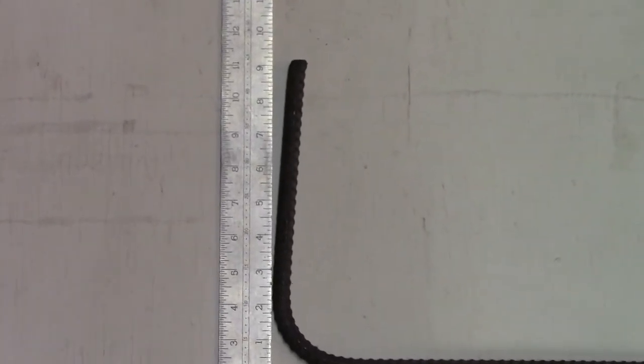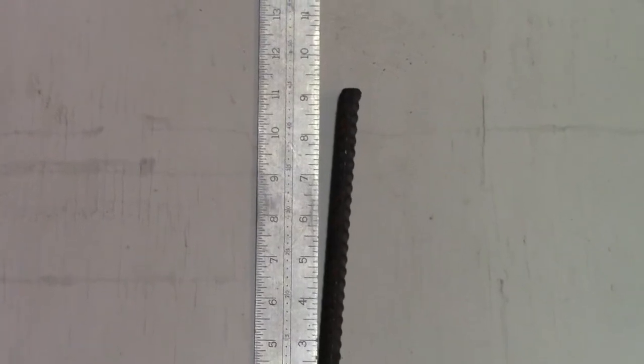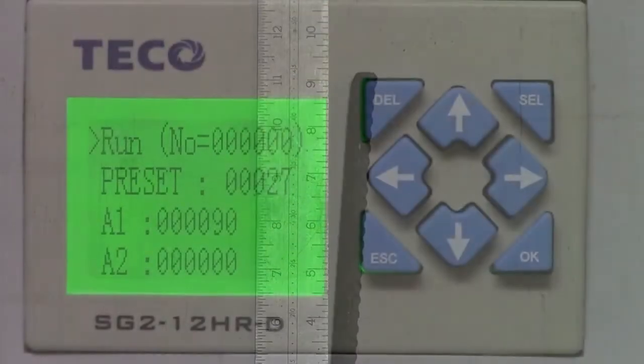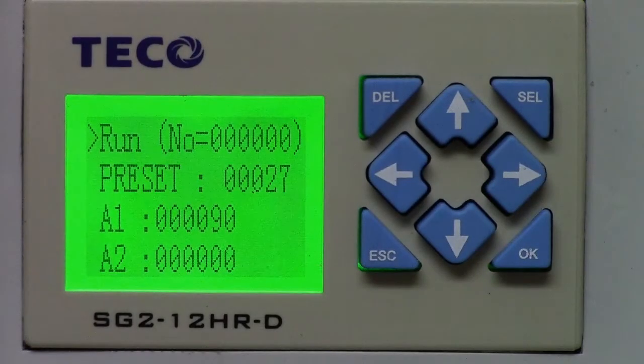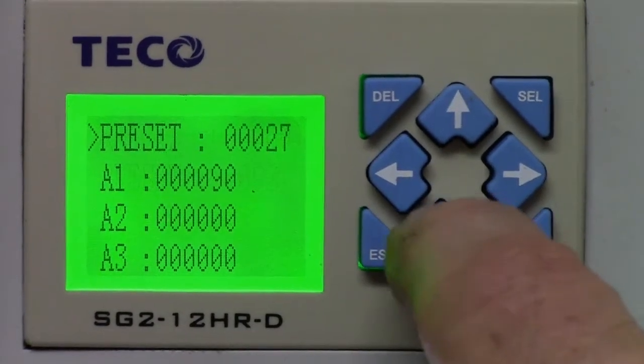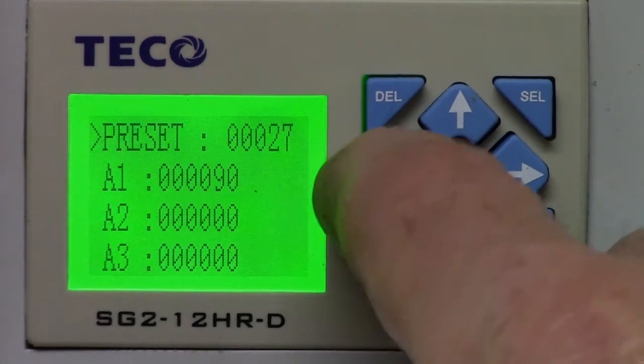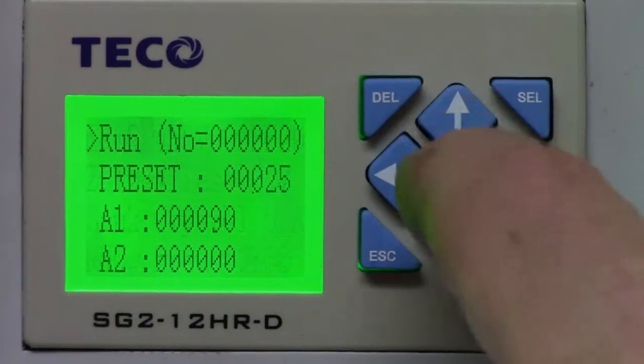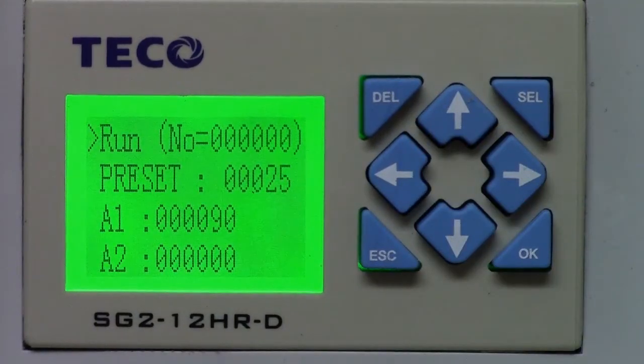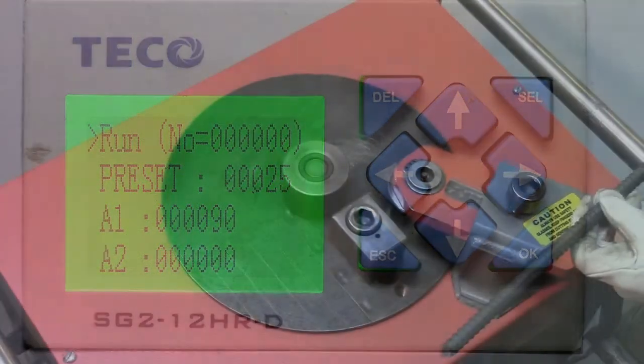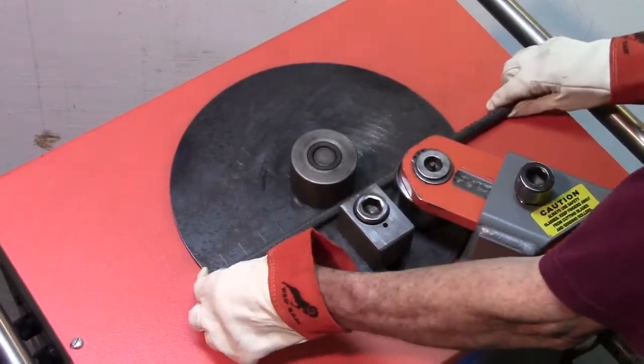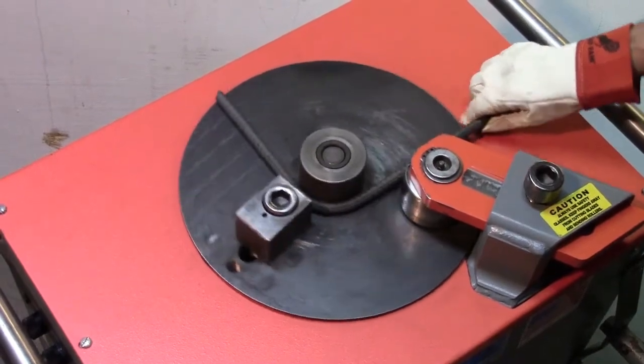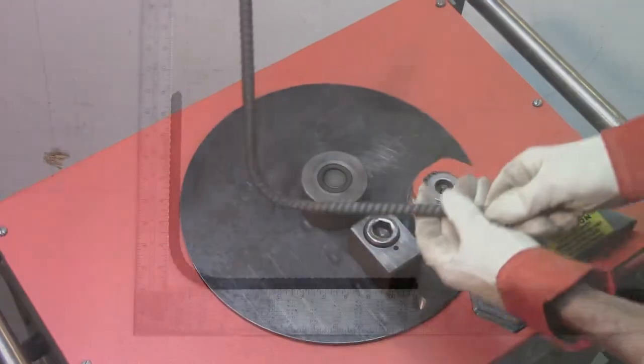In this case, we are bending too much, so let's decrease the preset value by 2 degrees to 25 and try again. The next test bend comes out just right. The controller is now calibrated for this setup.